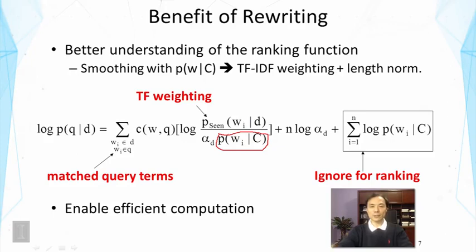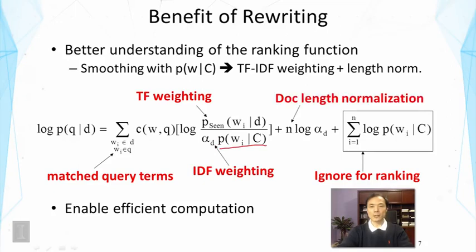Interestingly, we also have something related to the length normalization. Again, can you see which factor is related to document length in this formula? Well, I just said that this term is related to IDF weighting, this collection probability.